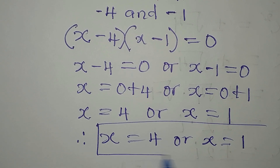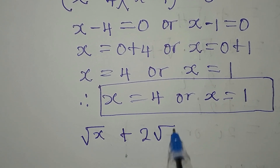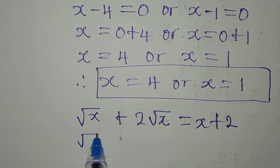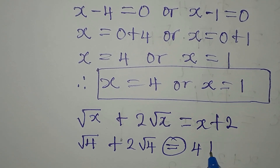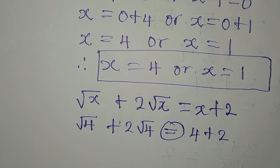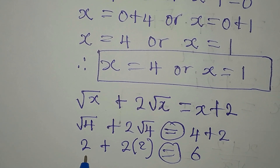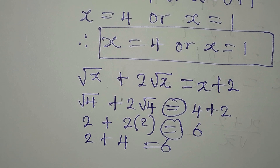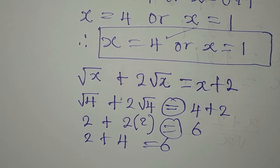We have two solutions, but we need to verify they satisfy the original equation: square root of x plus 2 square root of x equals x plus 2. Testing x equals 4: square root of 4 plus 2 times square root of 4 equals 2 plus 2 times 2 equals 2 plus 4 equals 6, and 4 plus 2 equals 6. So x equals 4 satisfies the equation.